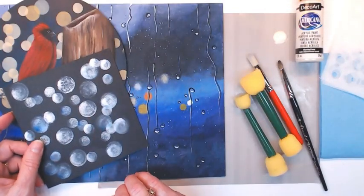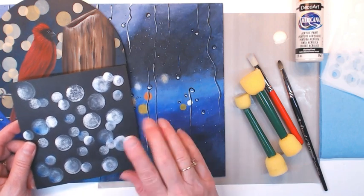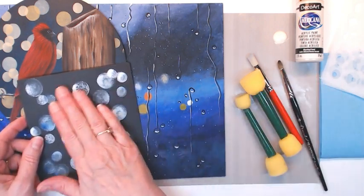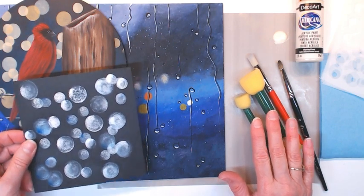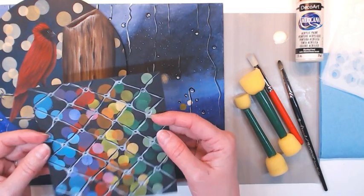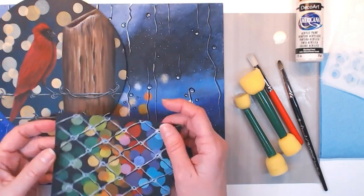I've got some examples of bokeh effect here that I've done with different tools. This side I have done with these pouncers, these sponge pouncers here, and this side I've done with a stencil.